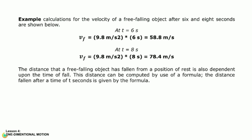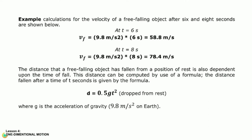The distance that a free falling object has fallen from a position of rest is also dependent upon the time of fall. This distance can be computed by use of a formula. The distance fallen after a time of t seconds is given by: d equals 0.5 times g times t squared, where g is the acceleration of gravity.